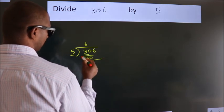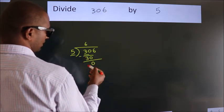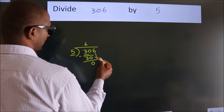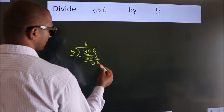Now we subtract and get 0. After this, bring down the next number, so 6 down. So, 6.